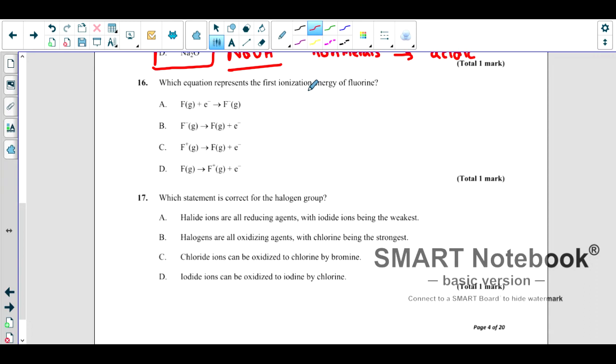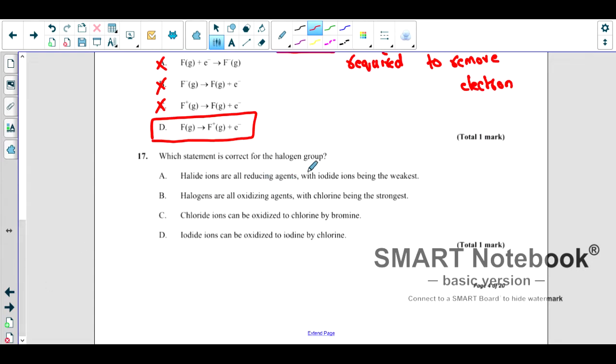Which equation represents the first ionization energy of fluorine? What is ionization energy? It is energy required to remove an electron from an isolated gaseous atom. Isolated means alone, gaseous when it's alone, it's a form of gas. Here electron is not removed, it's added. Here it's an ion form already, it's not the first ionization energy because it should be neutral. Here it's again ion, but here if you see what is happening, electron is removed, so this is the correct answer.